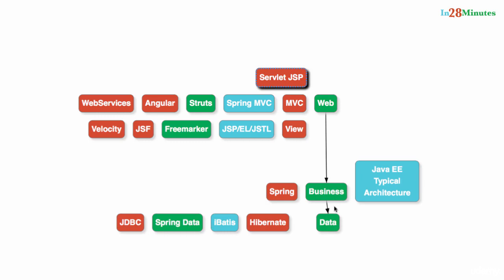The business layer typically needs the data layer to do its work. It cannot just have business logic — it needs data from the database or maybe from an external interface. So the business layer is dependent on the data layer. Similarly, the web layer is dependent on the business layer. For example, a controller in the web layer would invoke a service from the business layer.